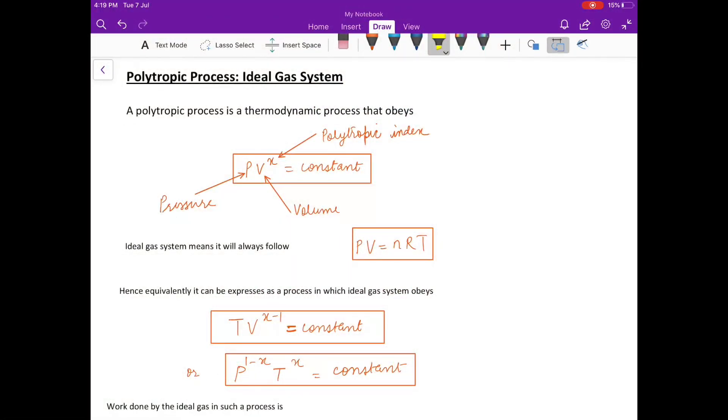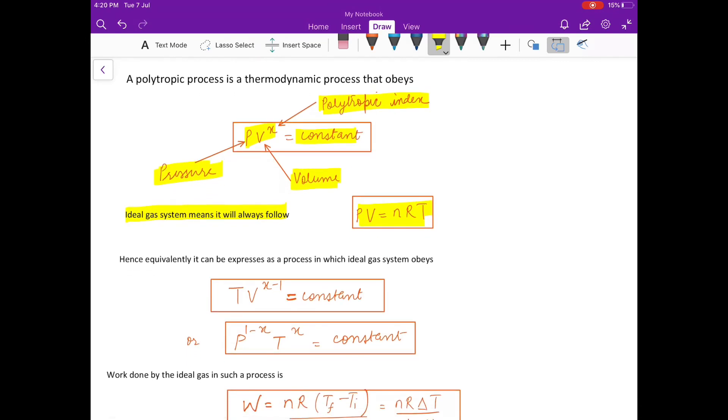So let's begin. A polytropic process is a thermodynamic process that obeys this equation PV to the power X is constant where P is the pressure of the gas, V is the volume of the gas and X is called polytropic index. So any process which is following this PV to the power X is constant that is known as a polytropic process and since we are talking of an ideal gas, it will always follow PV equal to NRT. Hence, equivalently using these two we can express this PV to the power X also in terms of TV as TV to the power X minus 1 is constant or P to the power 1 minus X T to the power X is constant. So for us all three equations are equivalent if we are talking of the ideal gas.